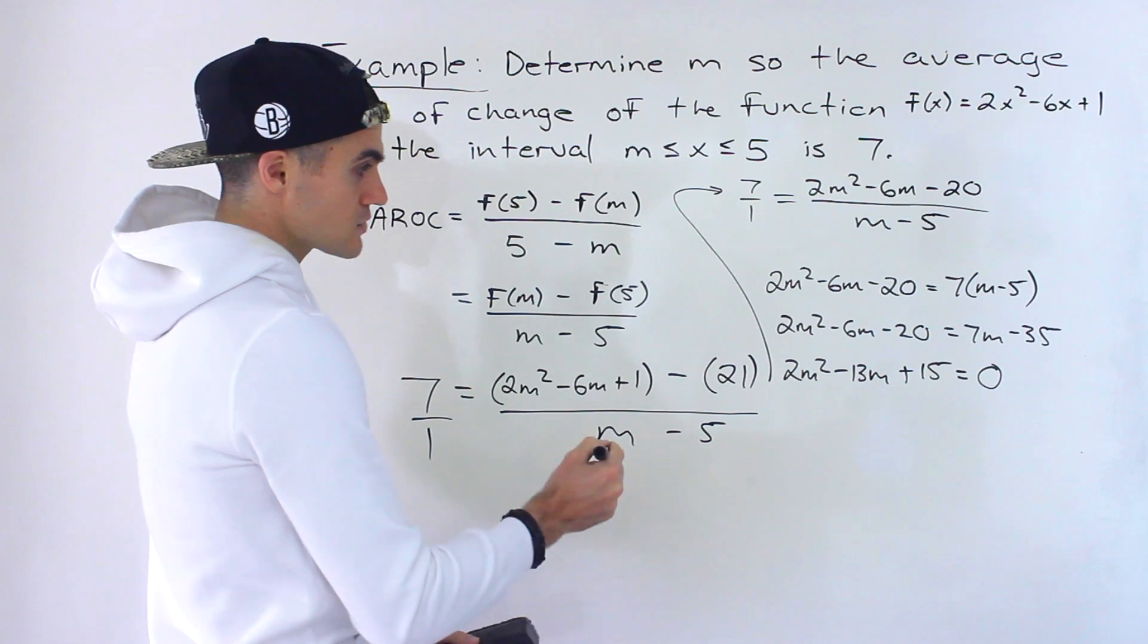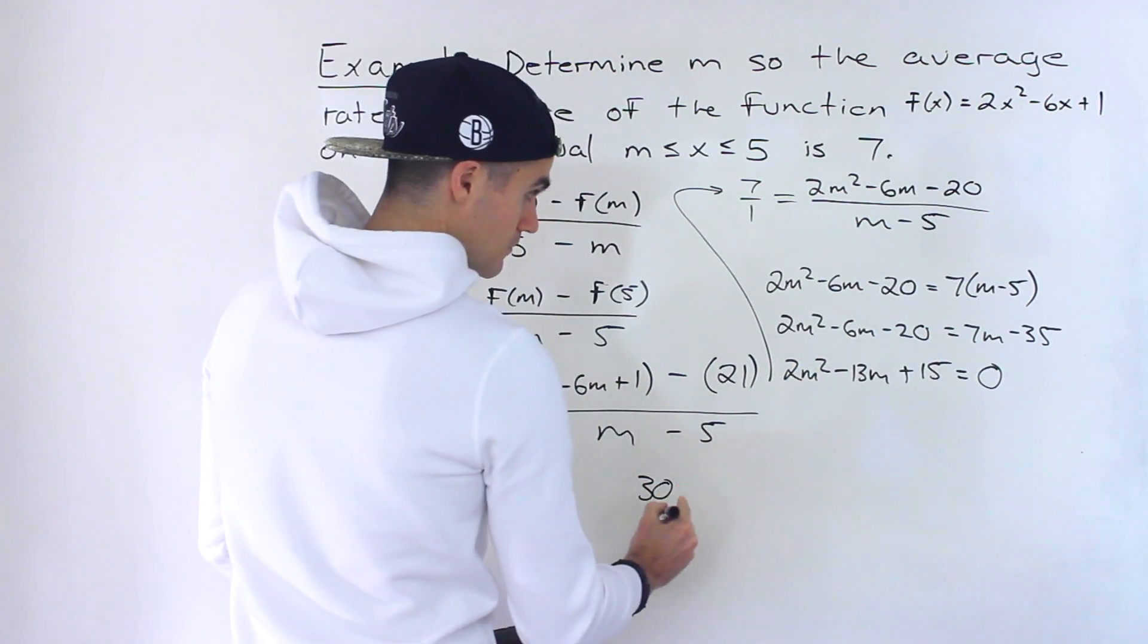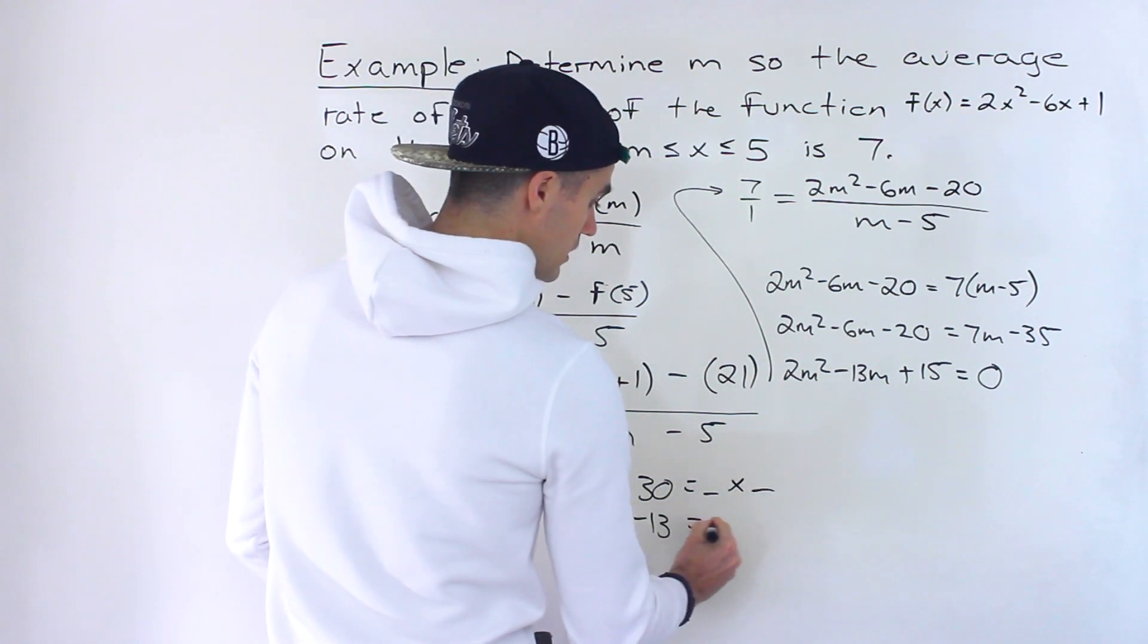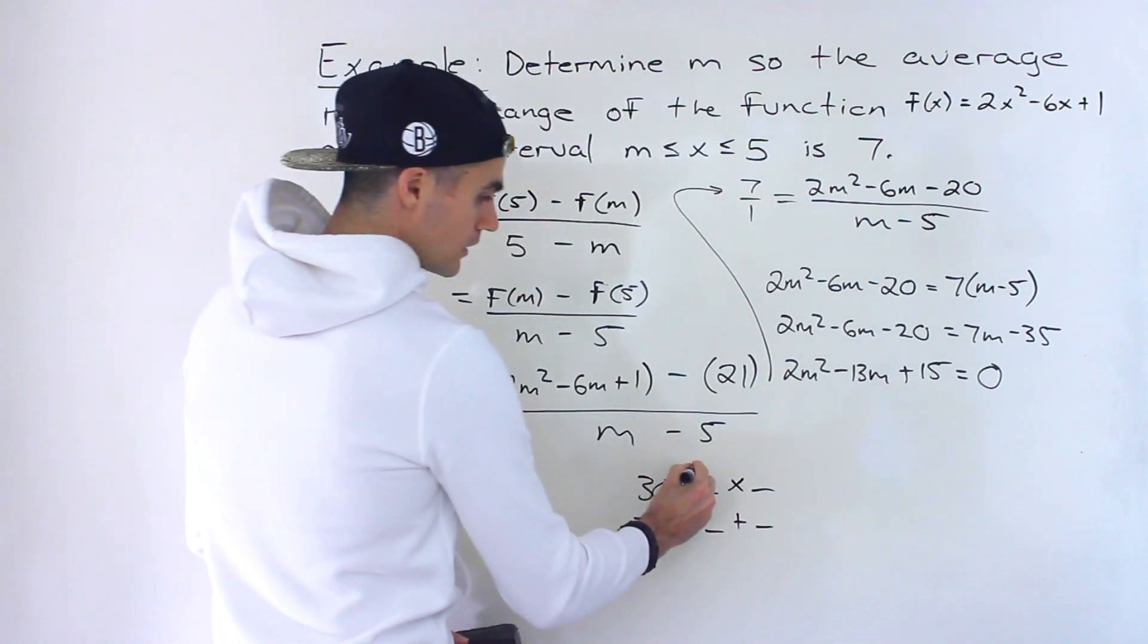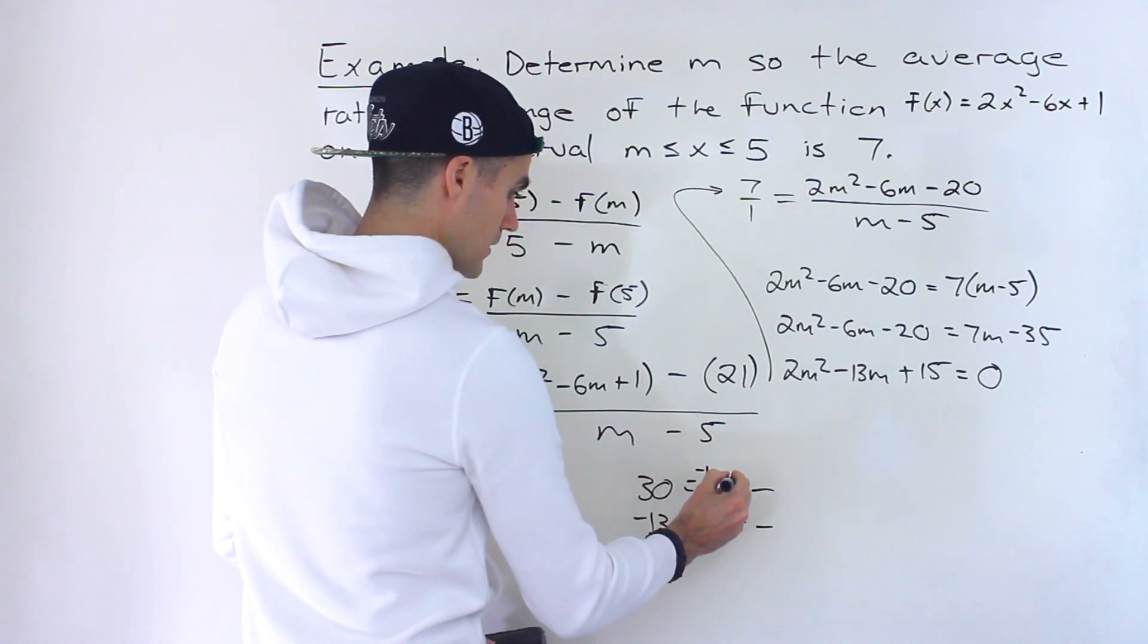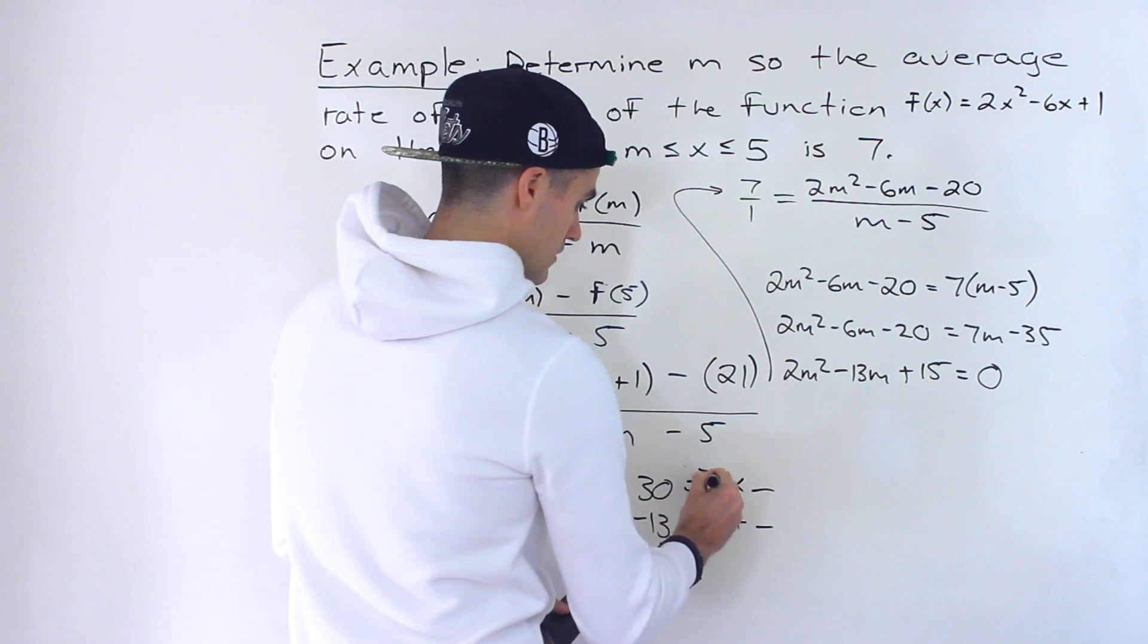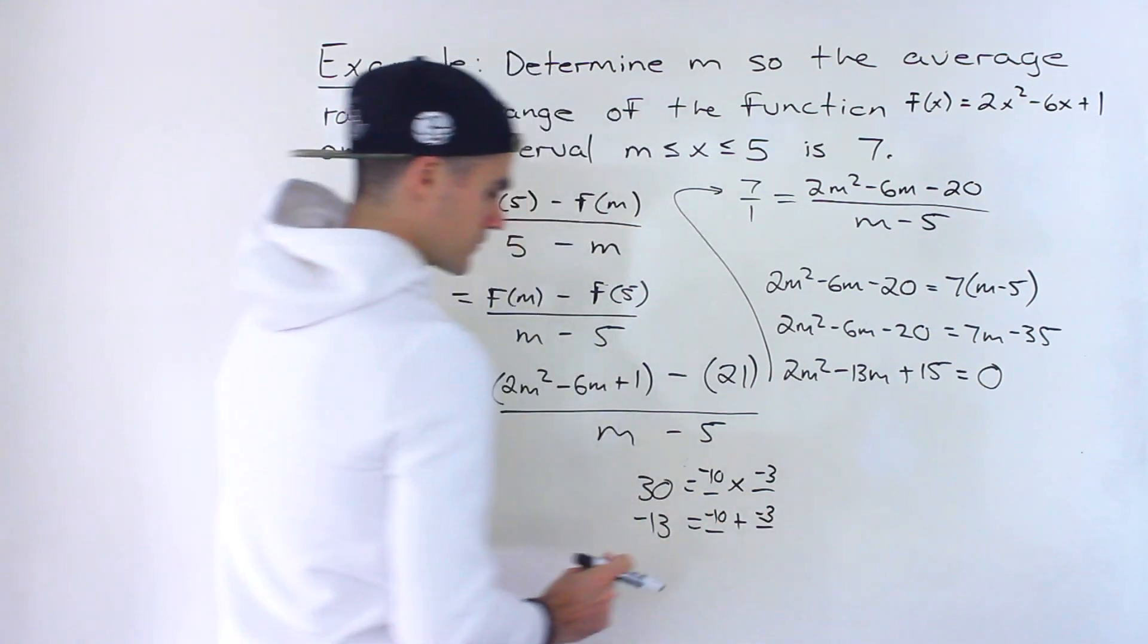So now we just have a quadratic equation to solve. And this actually factors smoothly because notice 2 times 15 gives us 30. And then the b value is negative 13. So what two values multiply to 30 and add up to negative 13? Well, it would be negative 10 and negative 3.